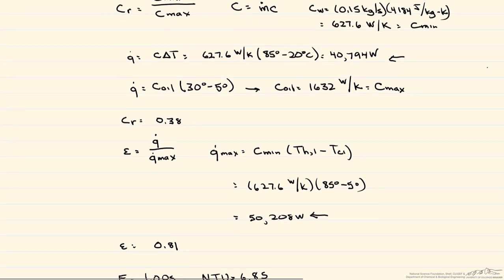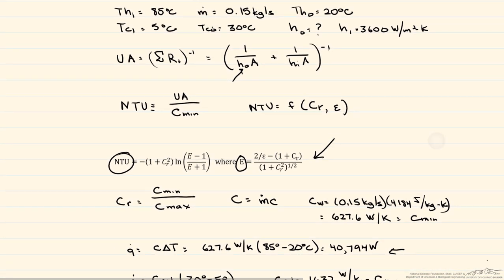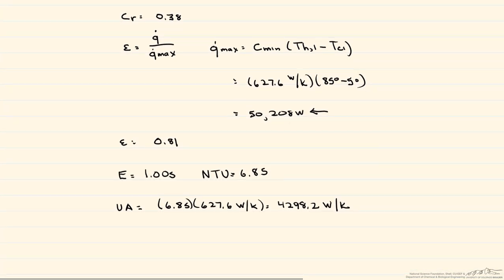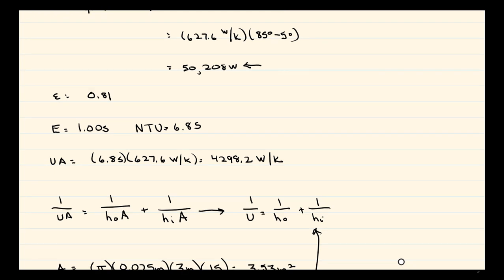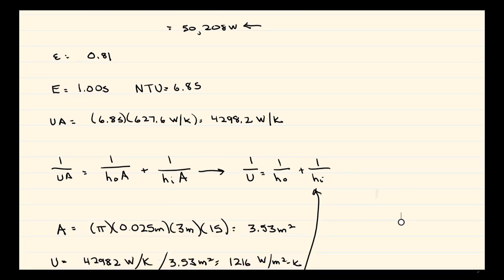And so now we go back to where we use that to find right here our outside convective heat transfer coefficient. So we can write that 1 over UA is equal to 1 over the outside heat transfer coefficient times A, plus 1 over the inside heat transfer coefficient times A, and the areas cancel out. So we're left with 1 over U is equal to 1 over H_O plus 1 over H_I.